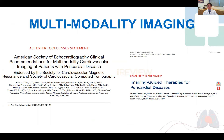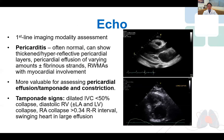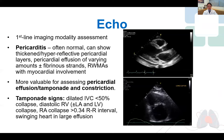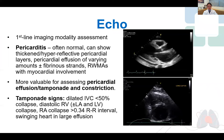Moving on to multimodality imaging, and I draw your attention to the multi-societal guidelines from 2013 led by Alan Klein here at the Cleveland Clinic, as well as this nicely written review article published in JACC Imaging 2019 by my former fellow colleagues. Echocardiography remains the first-line imaging modality to assess for pericardial diseases. Notably, it can often be normal, but it can also show pericardial thickening, effusions, and myocardial involvement.